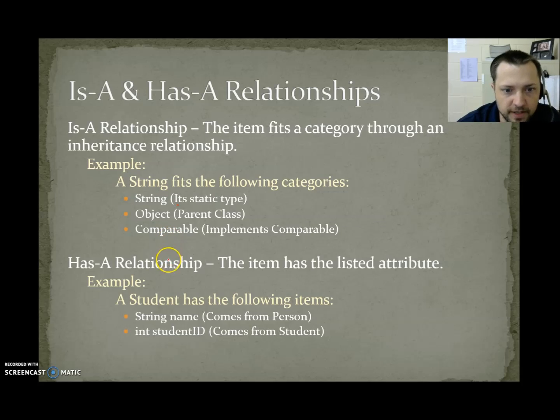Has-A relationship. The item has the listed attribute. A student has the following items: name, student ID. In our example we created earlier, we had students have first names, they have last names that come from person. And, a student ID comes from student. So, I wrote these slides before I wrote that example.